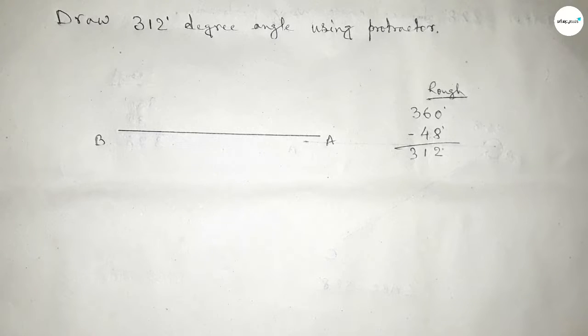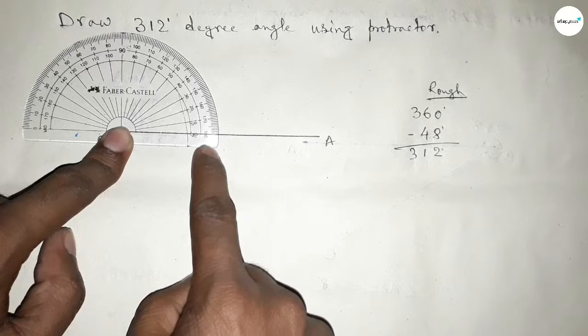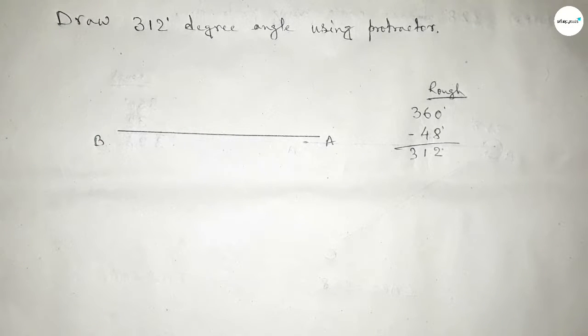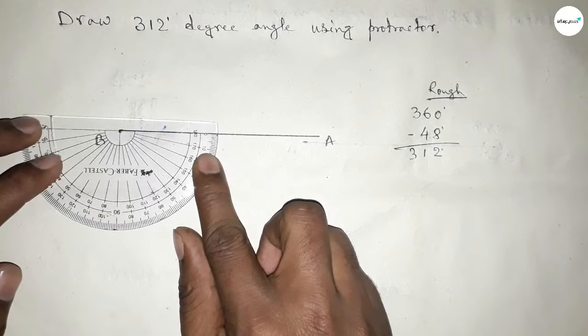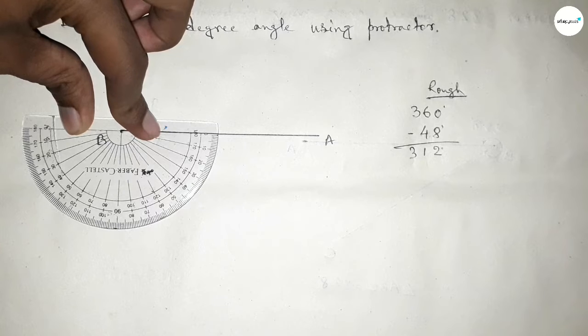So first we have to count 360 degree angle. Putting the protractor on point B by this way and counting angle. This is 180 degrees. Plus, putting the protractor on point B by this way and counting the angle.